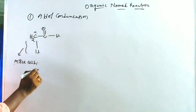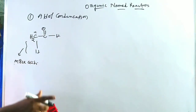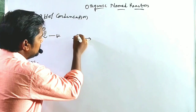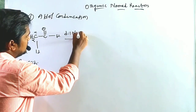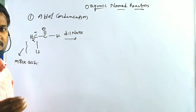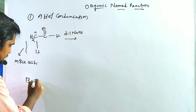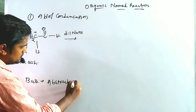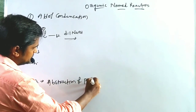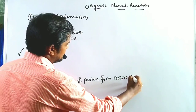The alpha hydrogen containing carbonyl compound is treated with a diluted base. The diluted base is NaOH — NaOH pellets dissolved in water. The definition of a base is the abstraction of a proton from an acidic position.